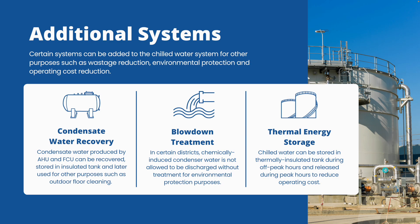Next are the additional systems — systems not necessarily required for the chilled water system to function, but needed due to specific standards and requirements. The first is the condensate water recovery system. AHU and FCU produce a lot of condensate water as they dehumidify the air. This condensate can be recovered and stored in an insulated tank, then used for other purposes such as cleaning outdoor floors, watering plants, and gardening.